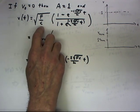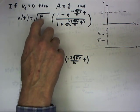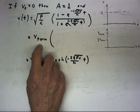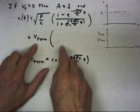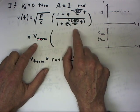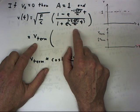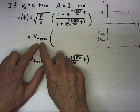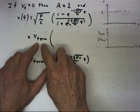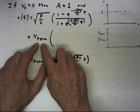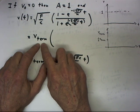The square root of f over c is our terminal velocity, so that coefficient out front is the terminal velocity. This expression — 1 minus a quantity divided by 1 plus a quantity — is always less than 1, meaning that our velocity is always less than the terminal velocity for every value of t. So v approaches terminal velocity from below.